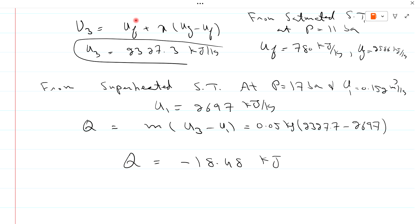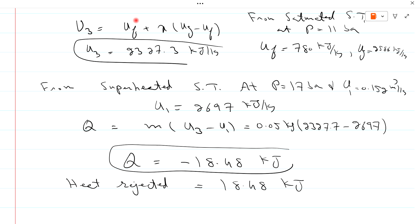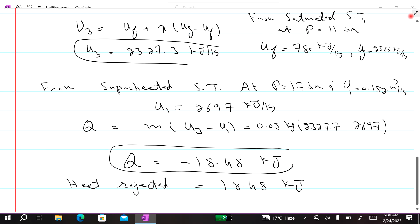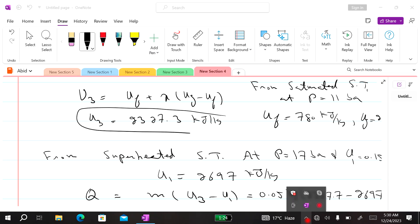The negative sign means heat is rejected. Heat rejected is equal to 18.48 kJ. This is the final solution. For more videos, please like and subscribe to my YouTube channel. Thank you.